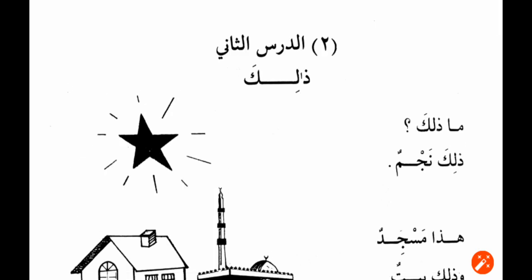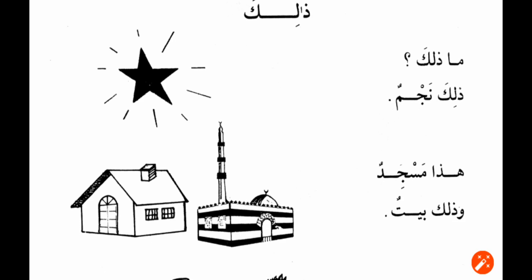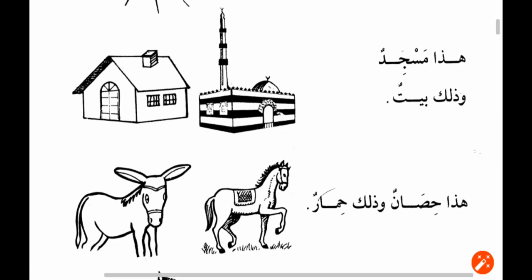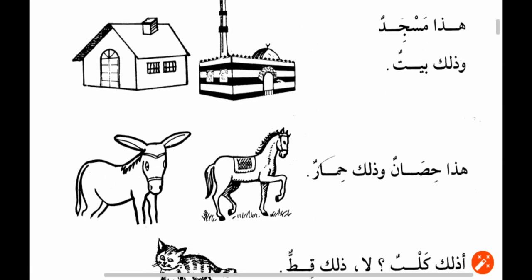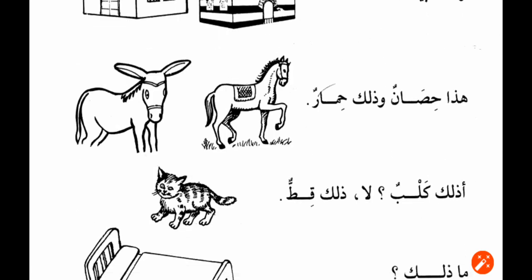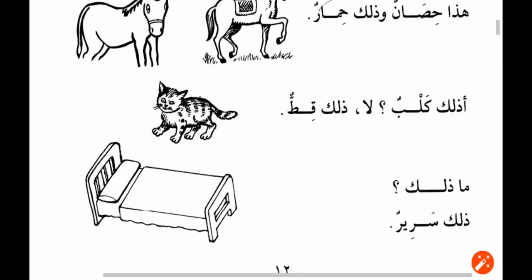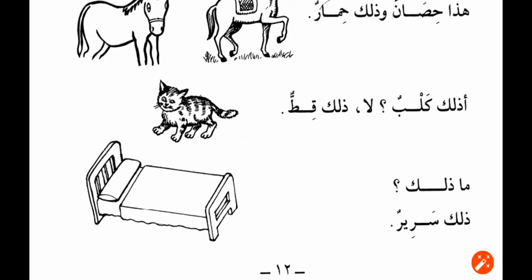Dalika refers to an object that is away from us and it is the opposite of hada. Hada means 'this', dalika means 'that'. Ma dalika? Dalika najmun. Hada masjidun wa dalika baytun. Hada ishanun wa dalika himarun. A dalika kalbun? La, dalika kittun. Ma dalika? Dalika sarirun.